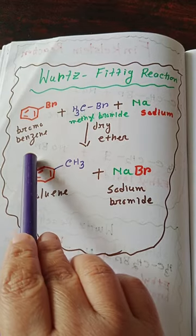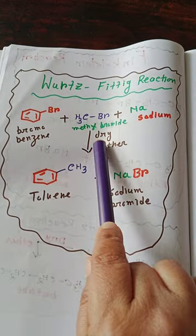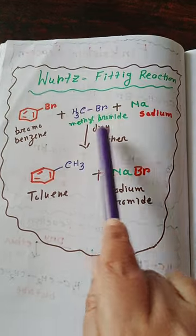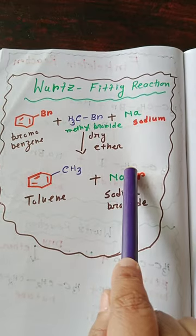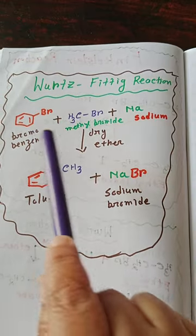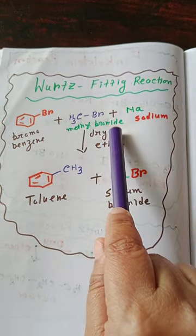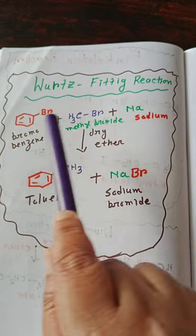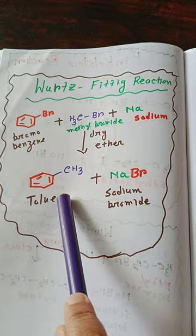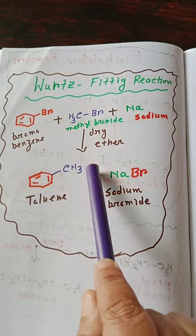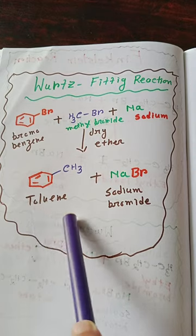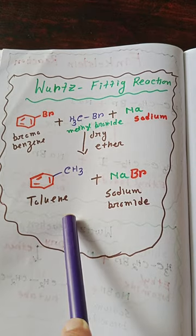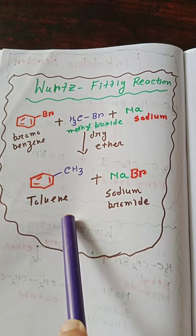Here you can see we have taken bromobenzene and methyl bromide, reacted with sodium in dry ether as a solvent. The methyl group from methyl bromide and the benzene ring from bromobenzene react and combine to form toluene, which is an aromatic hydrocarbon.